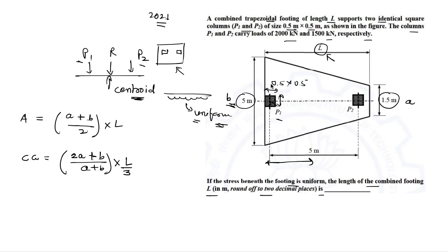In this question we don't need the area directly, but we use the condition that the centroid of the footing coincides with the resultant location of forces P1 and P2. Using that condition, we can solve the question.